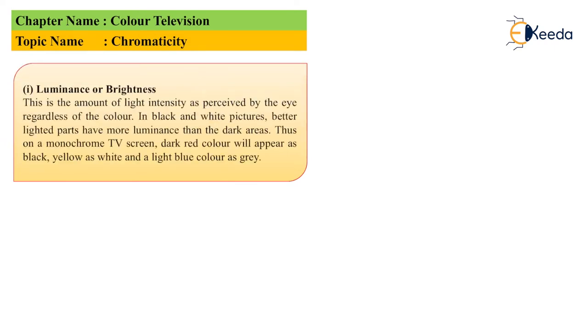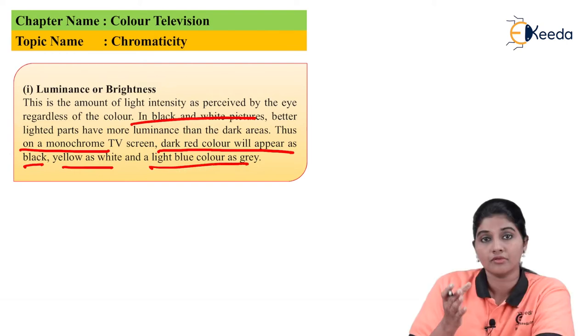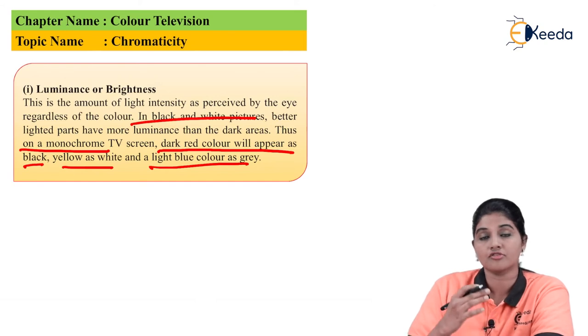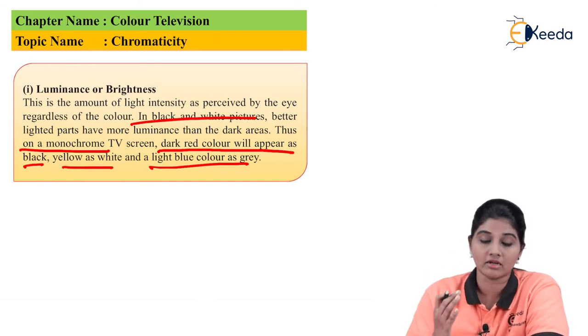The first parameter is luminance or brightness. It is the amount of light intensity received by the human eye irrespective of the color. In case of black and white pictures, white parts have more luminance or brightness compared to the black parts. In case of monochrome TV systems, dark red color appears as black, yellow appears as white, whereas light blue appears as gray.